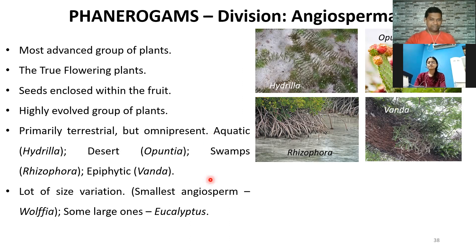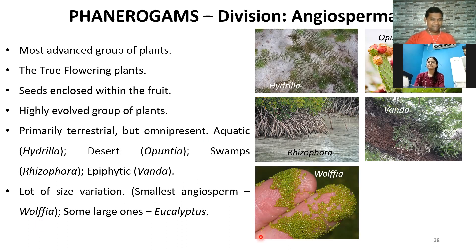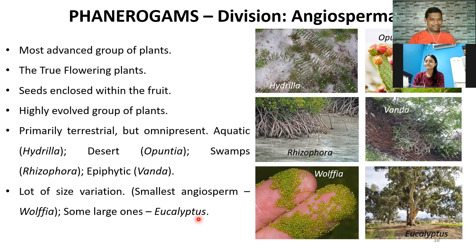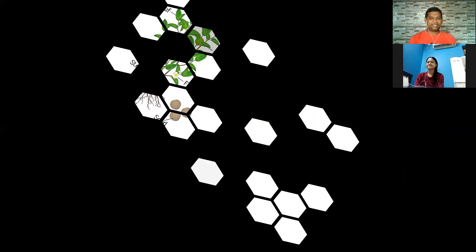In terms of size, there is a smallest angiosperm called Wolffia. The largest angiosperms include eucalyptus trees and mango trees. Among the trees we saw, banyan trees are huge — like the one at Mayureshwar Mandir. So when it comes to angiosperms there is very good variation.